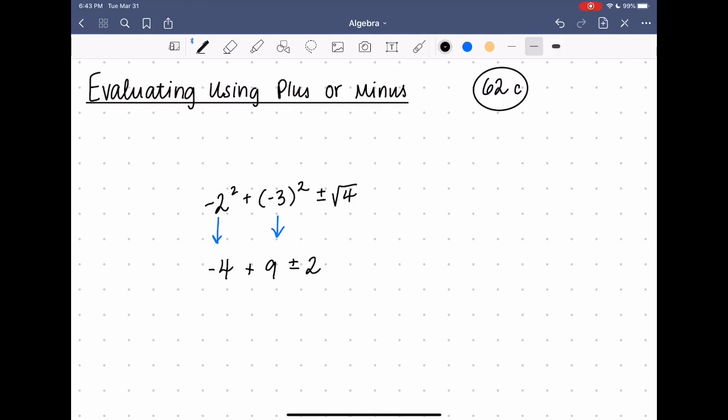Now let's just keep solving left to right. So negative 4 plus 9 is 5 plus or minus 2. So I'm going to have two answers to this equation.